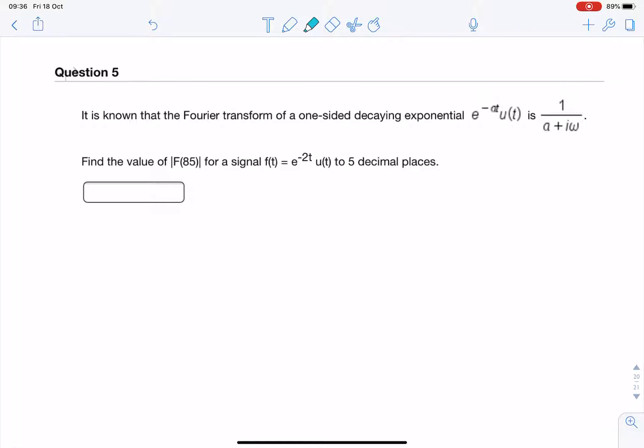In this question, again, we're given a Fourier pair, so we're given a one-sided decaying exponential in the time domain, and we're given its corresponding frequency domain representation, f of omega.